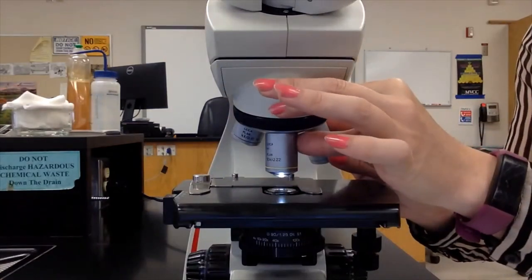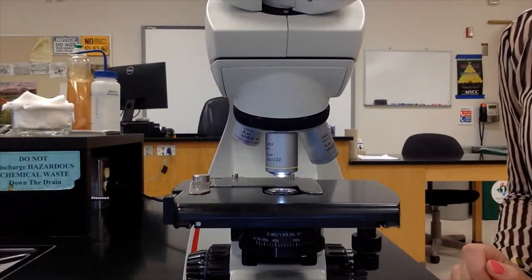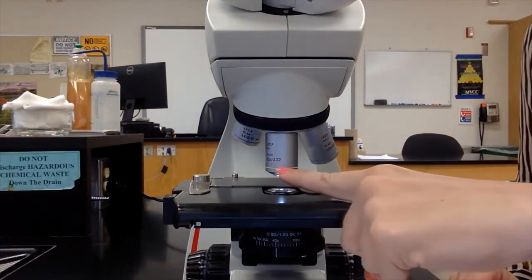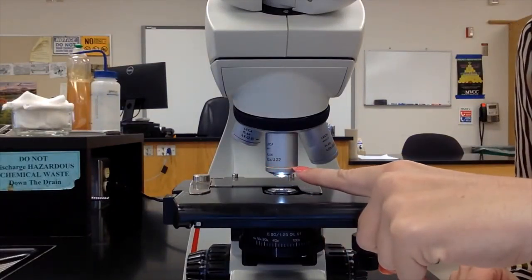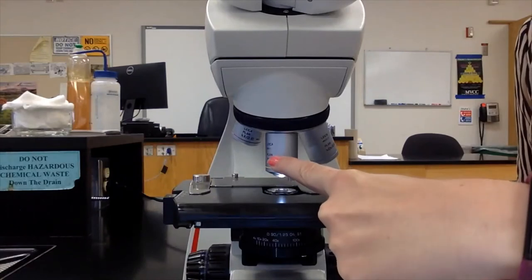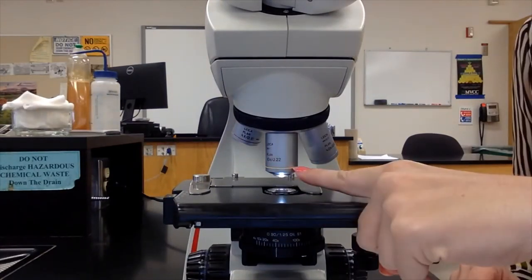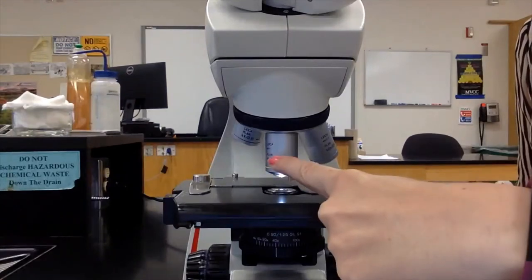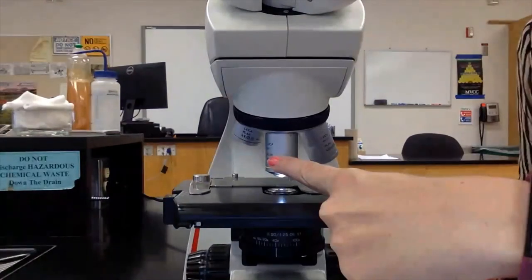Taking a look at this lens, it has a yellow band and says 10 times magnification. So how many times total magnification are you viewing your object at? Take a second and pause the video and see if you come up with the right answer.